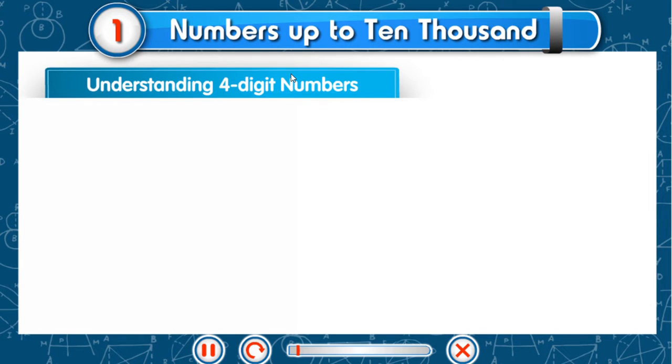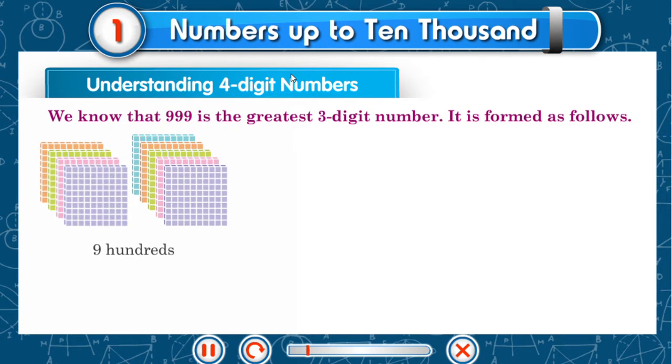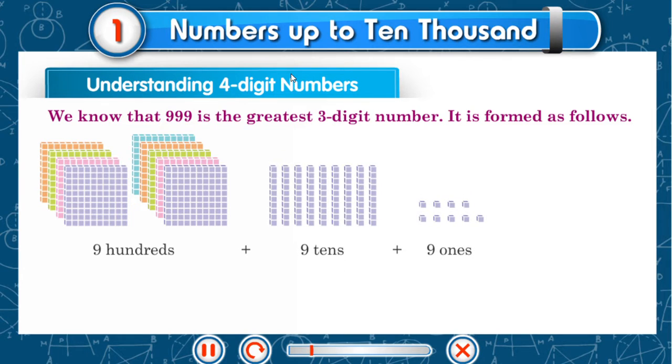Understanding 4-Digit Numbers. We know that 999 is the greatest 3-digit number. It is formed as follows: 9 hundreds plus 9 tens plus 9 ones. 900 plus 90 plus 9 equal to 999.